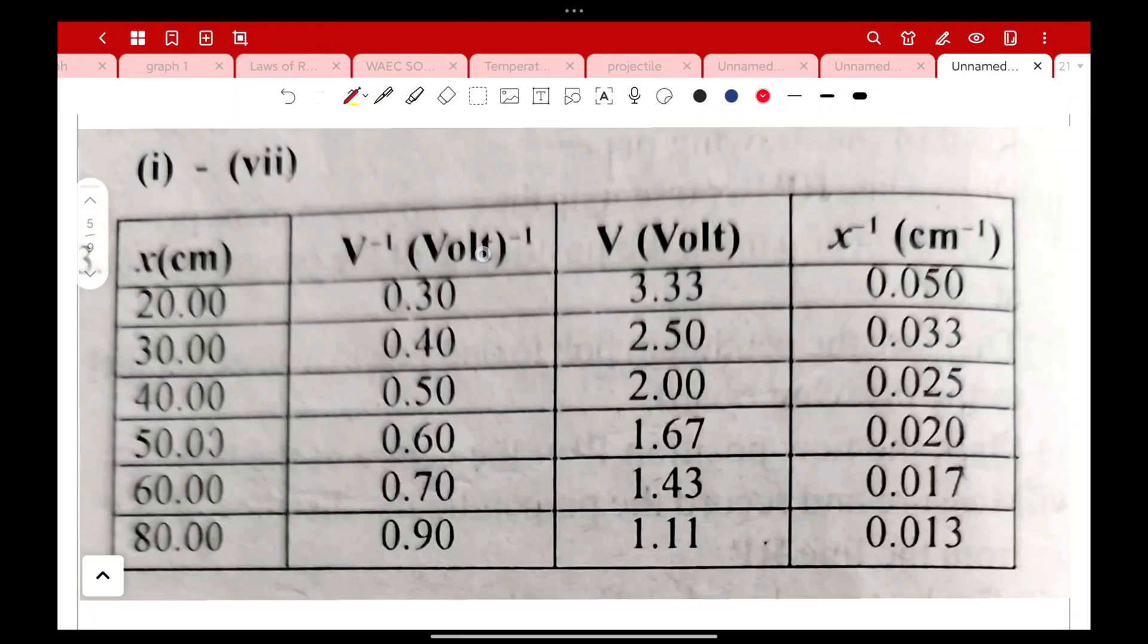Your voltage you can see we have 3.33, 2.50, 2.00, 1.67, 1.43, and 1.11. If you compare your voltage to your distance which is x, you see that as x is increasing, V is decreasing. V inverse gives you the values you are seeing, and x inverse also gives you the values displayed. If you understand this concept it will save you time.